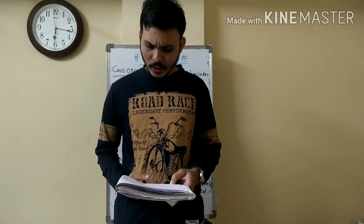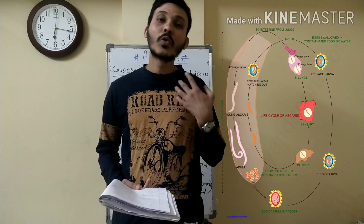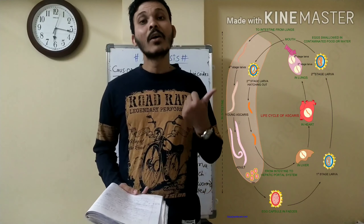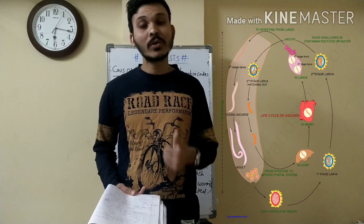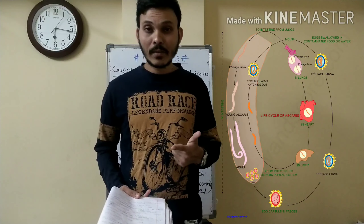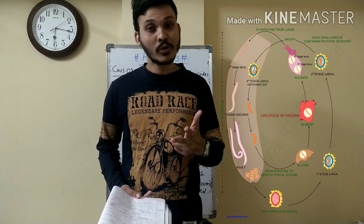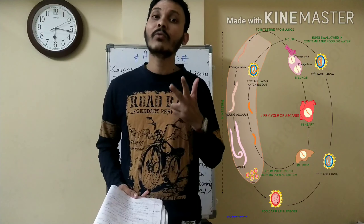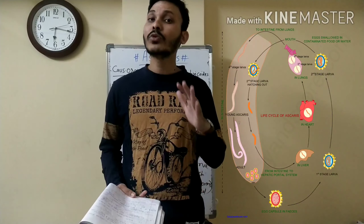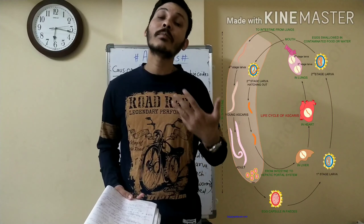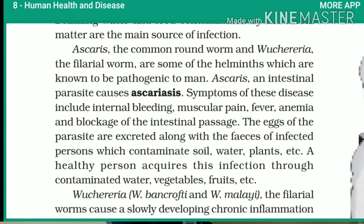I have told you about molting — four times molting. Number one, the first time in the soil. Second time, the intestine. Third time, the lungs. And the fourth time, the molting takes place in the intestine and lungs.